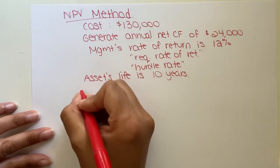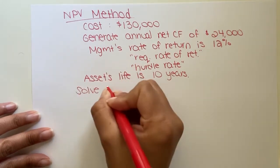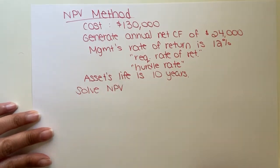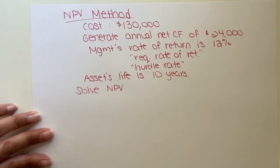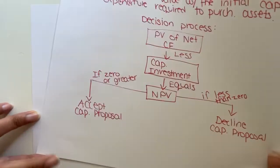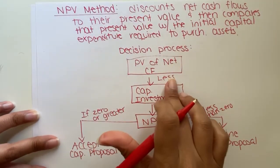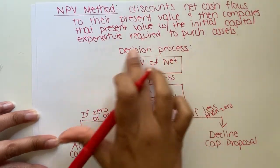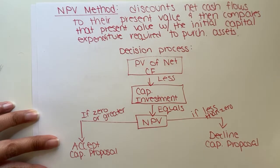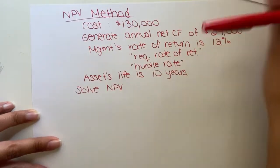Now, solve for the asset's net present value. So, the present value of net cash flows — we need to figure this out first. Let me give you the formula. We need to figure out the present value of your net cash flows.